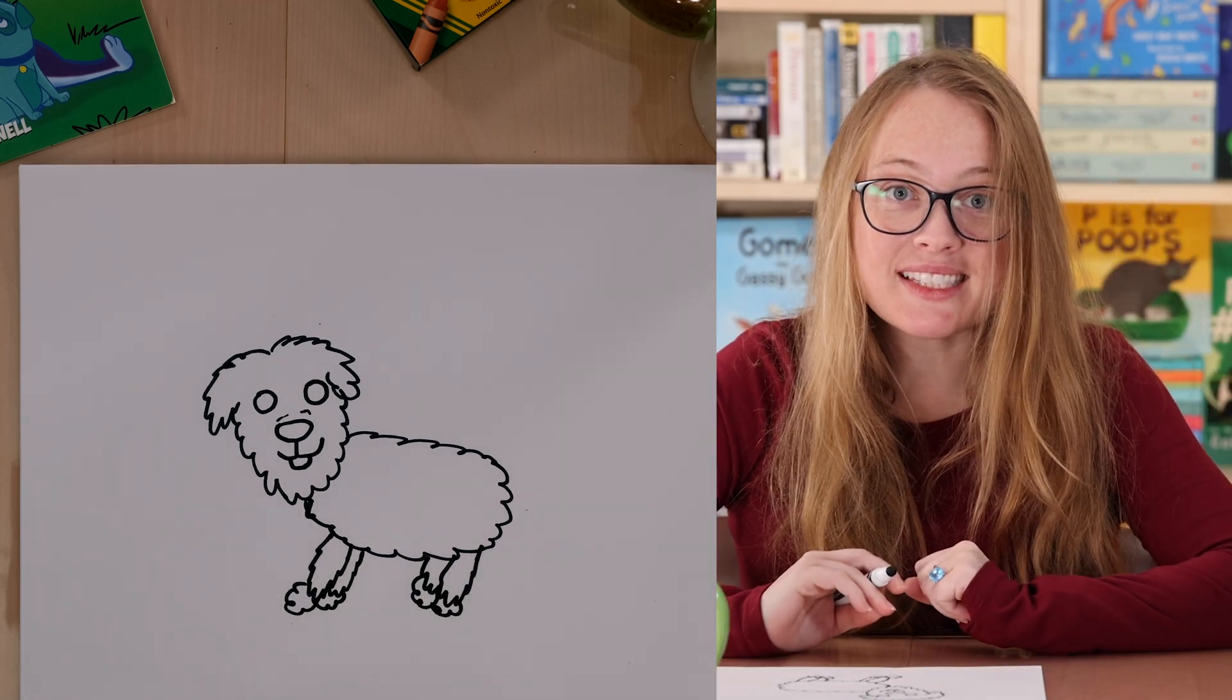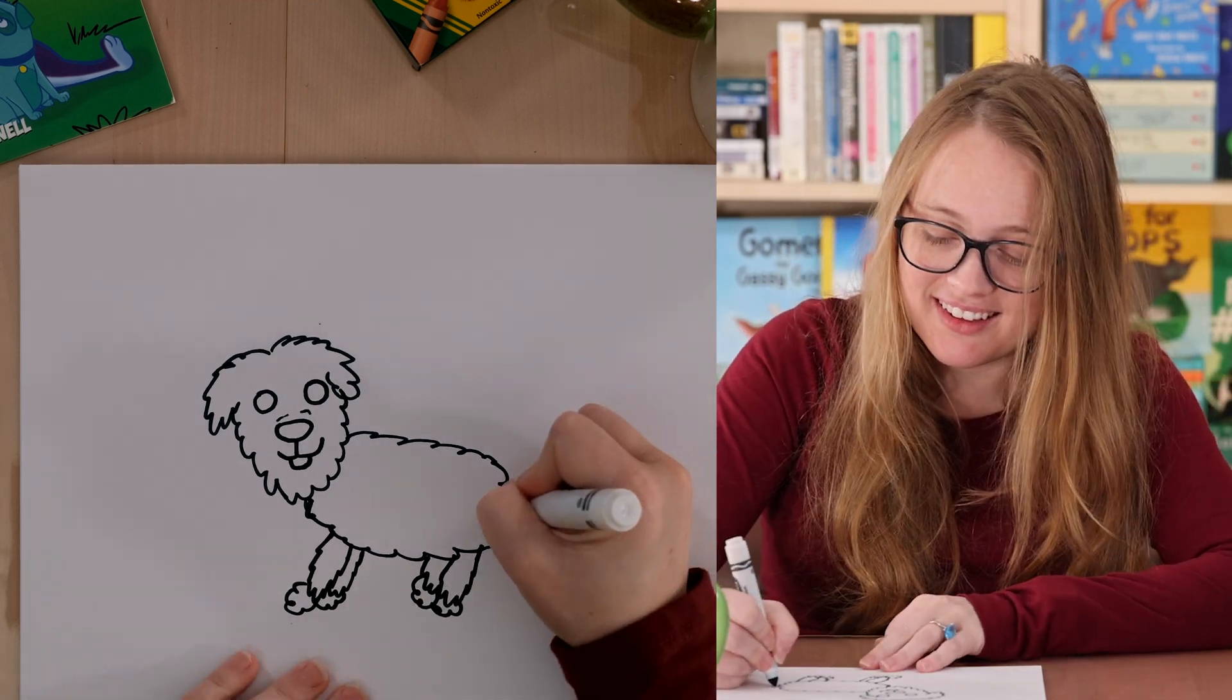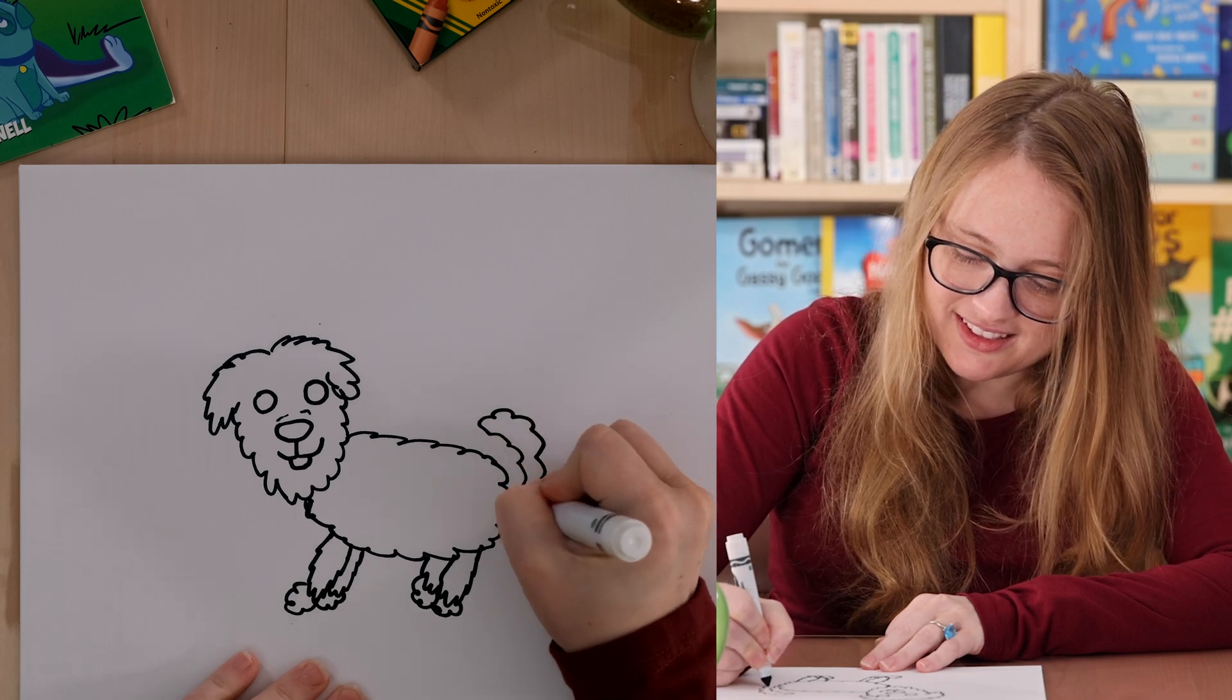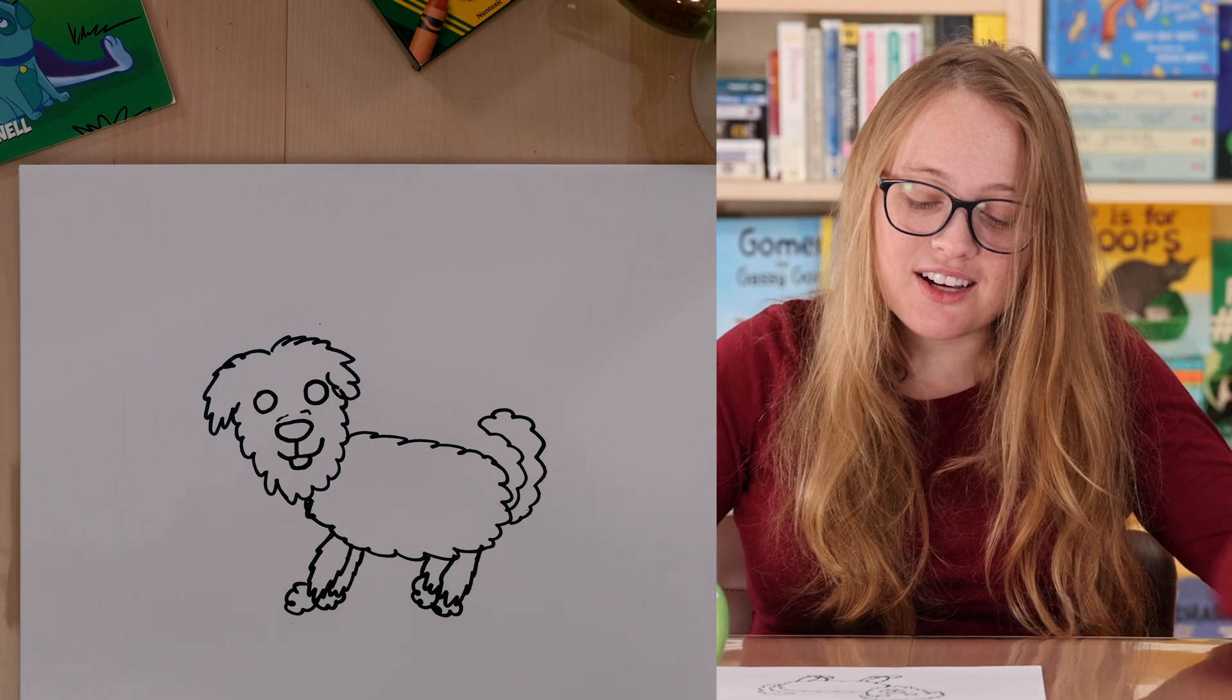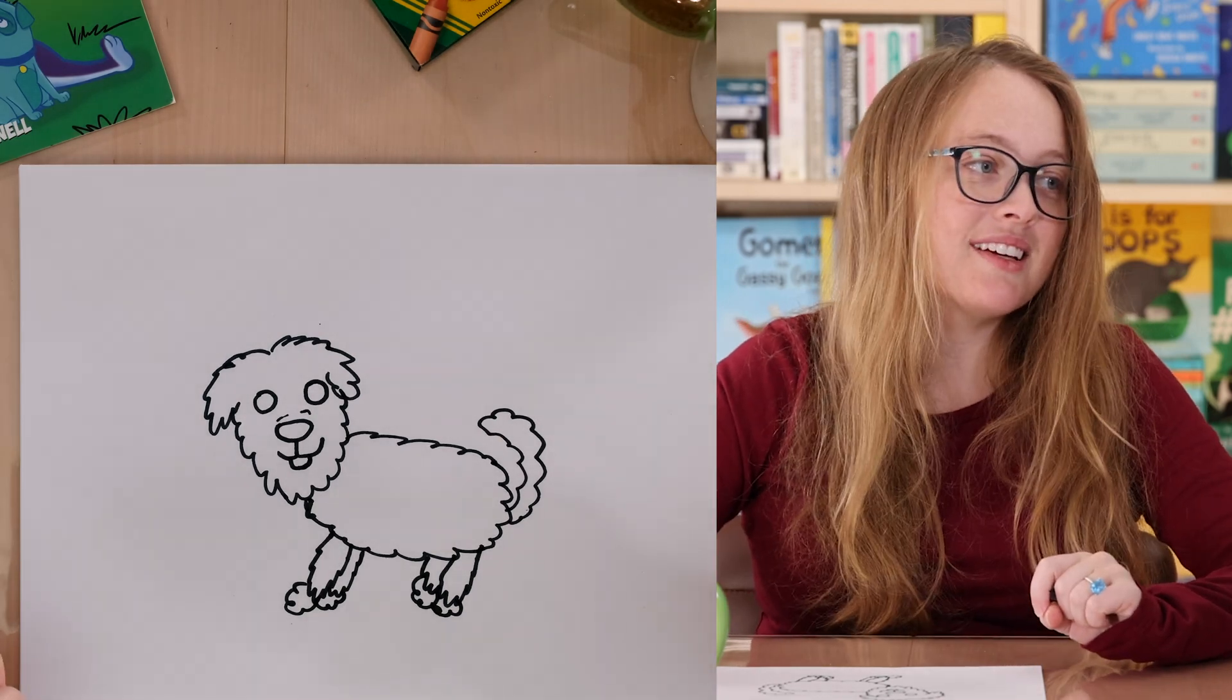All right, what's it missing? It's missing a tail. So, that's the doggy tail. Now, our doggy outline is pretty much done.